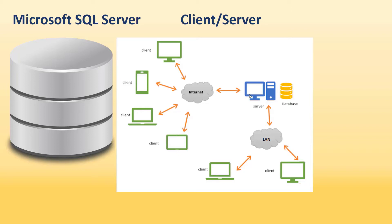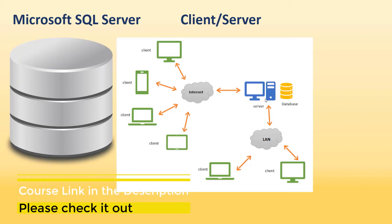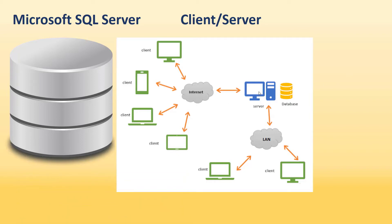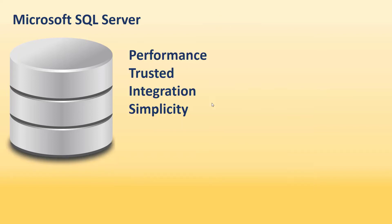Only the server software interacts with the data files. All requests for data — additions, deletions, and updates — are funneled through the server software. These requests come from computers running client software, which is what the user interacts with. For example, if you request an alphabetical list of all products, the client submits the request over the network to the server, which processes, filters, sorts the data, and sends results back to your client software.